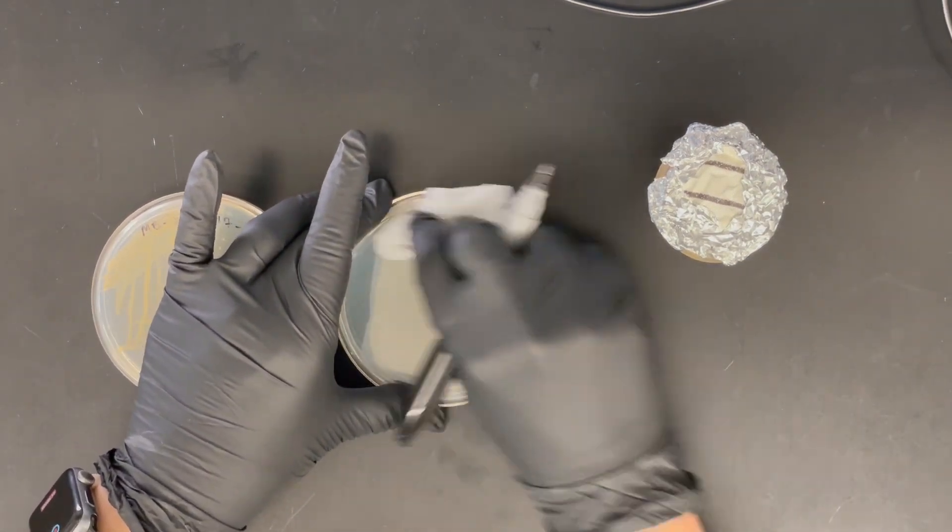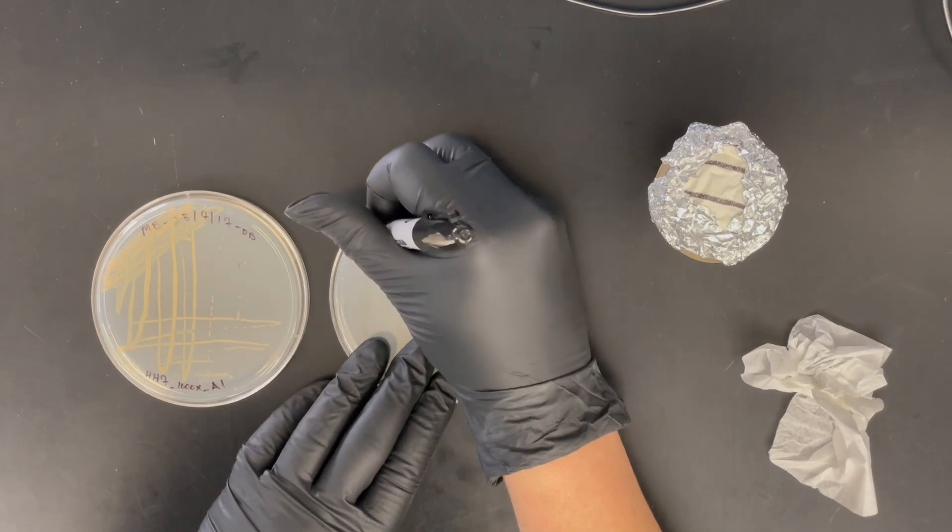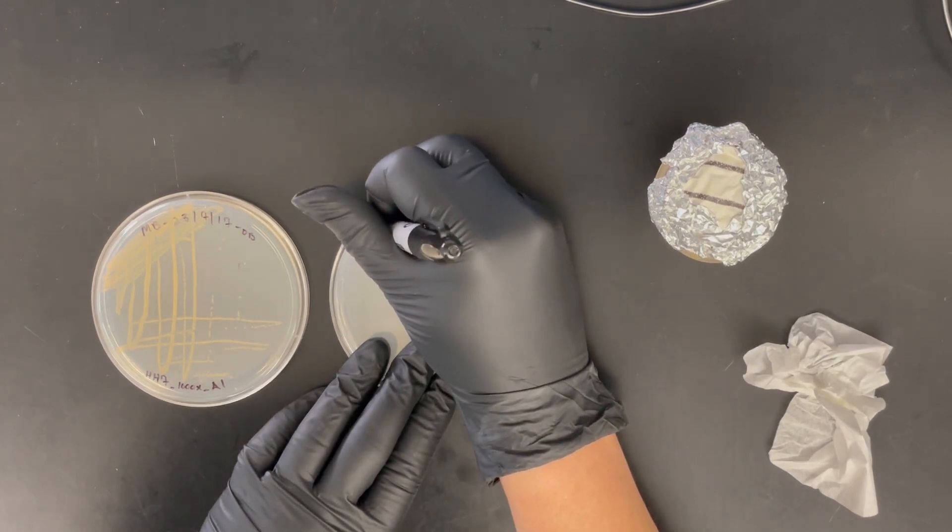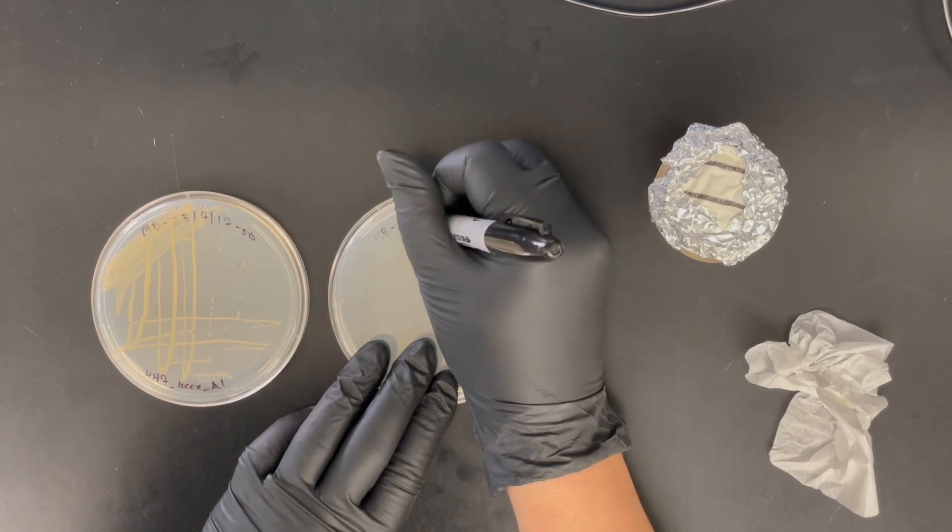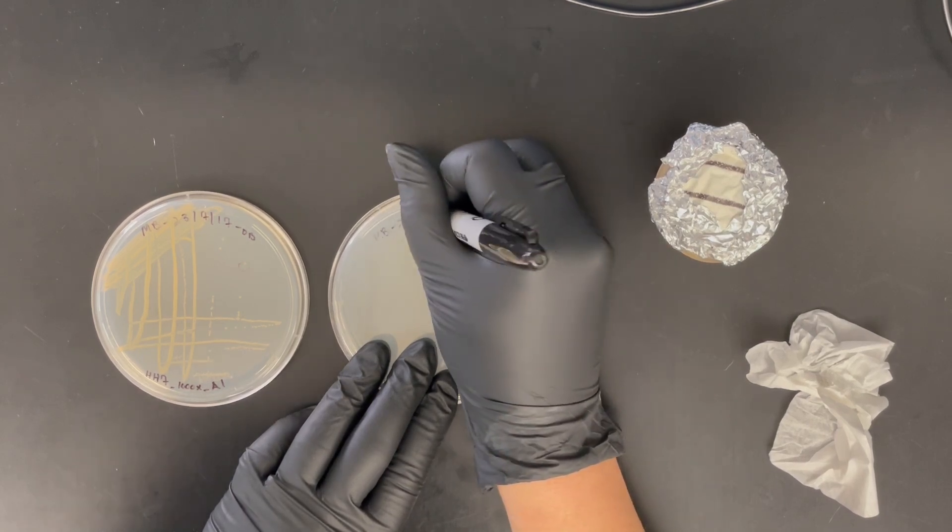That last number after A1 on the bottom of the plate, it's going to be A2 instead. That's going to indicate that it's the second streak from the A colony that you picked off of the HH7000X solution plate.